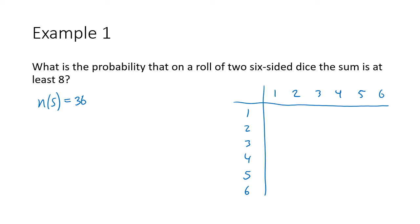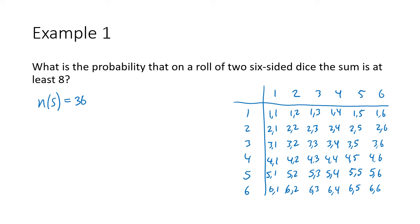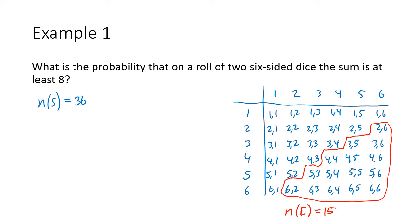How many of these entries have a sum that's at least eight? That's going to be the bottom right-hand corner of the chart. If you think of this as (1,1), (1,2), (1,3), (1,4), and so on, the chart gets filled in, and we identify which possibilities have a sum of at least eight. That portion of our chart gives us 15 results. So the probability is 15 divided by 36.